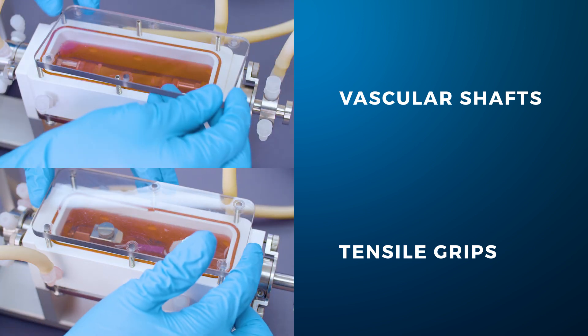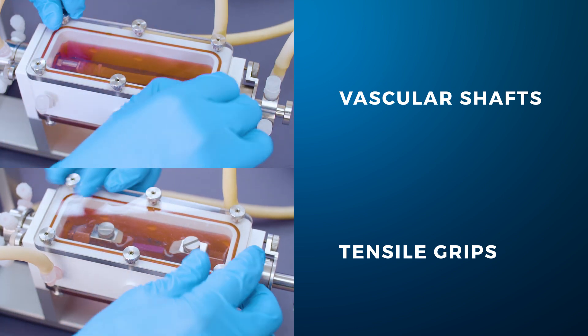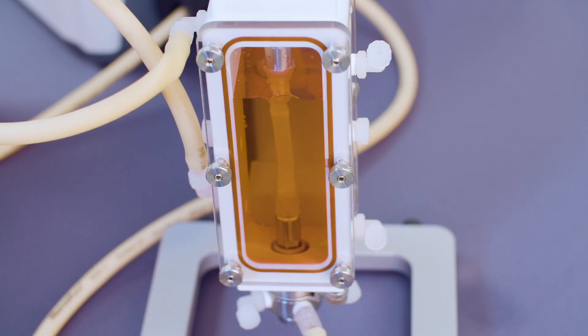Once the sample is in place, secure the front door with the thumb screws until a tight seal is achieved. Flip the stand right side up and finish filling the chamber until the sample is fully submerged in media.